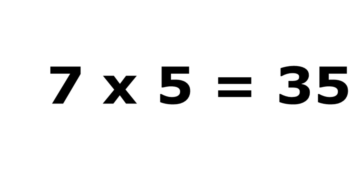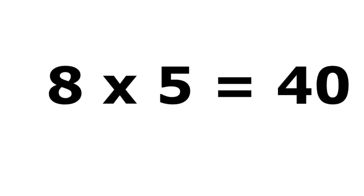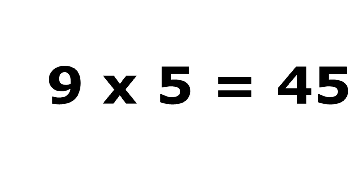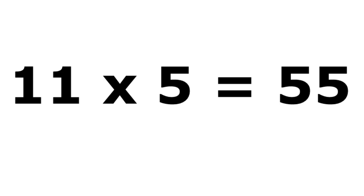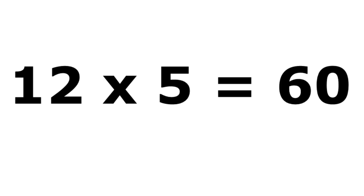7 times 5 is 35. 8 times 5 is 40. 9 times 5 is 45. 10 times 5 is 50. 11 times 5 is 55. 12 times 5 is 60.